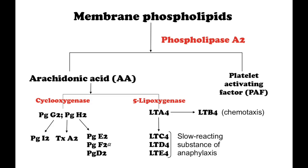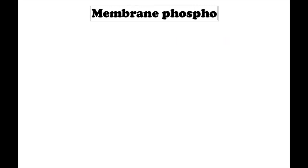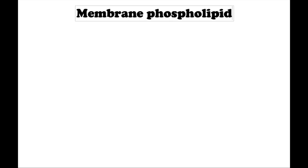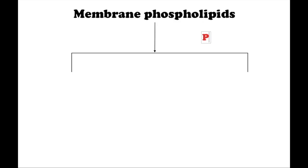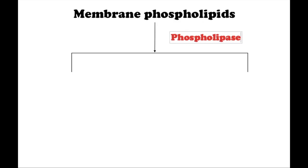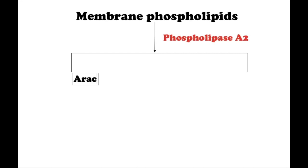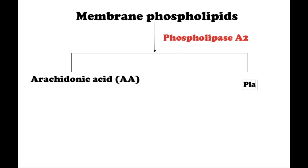Hi everyone, it's SchematicMath and today we are going to talk about the arachidonic acid pathway. From the phospholipids of cell membranes, under the influence of phospholipase A2, there are formed arachidonic acid and platelet activating factor.